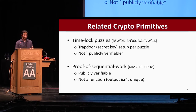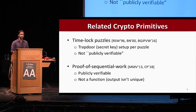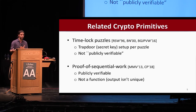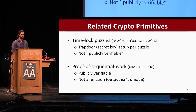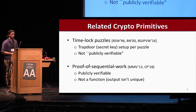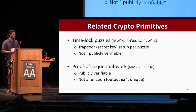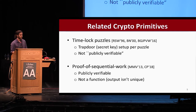VDFs are very closely related to crypto primitives you may be familiar with. The first is time lock puzzles, dating back to 1996, which also involve a puzzle requiring sequential time to compute. The main difference is that time lock puzzles involve a trapdoor or secret key setup per puzzle, and therefore are not publicly verifiable in the same sense. More recently, proofs of sequential work solved the public verifiability problem and are publicly verifiable, meaning they do not require any trapdoor or secret key setup per puzzle. On the other hand, these constructions do not have unique outputs, so they are not functions.